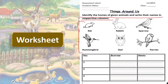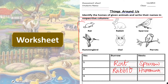Who digs burrows? Rats dig burrows, and rabbits also dig burrows — so they go under the burrow column. Sparrow makes nests, hummingbird also makes nests, owl makes nests, and parrots also make nests. This is how you will complete the worksheet.